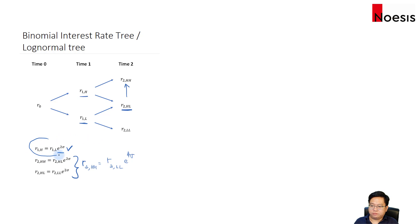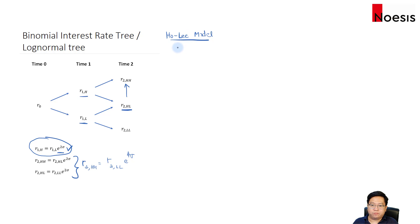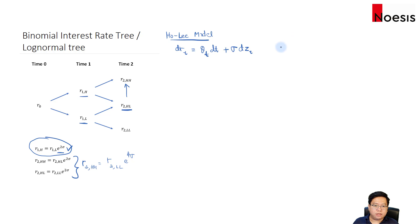Now I'm going to derive this relationship, starting with the Ho-Lee model — though this is not the model we will ultimately use, since the Ho-Lee model does not assume a log normal distribution. In the Ho-Lee model, dr at time t equals theta sub t dt plus sigma dz sub t, where theta is the time-dependent drift. Here the short rate r is assumed to follow a normal process, which doesn't fit our purpose for the binomial interest rate tree.